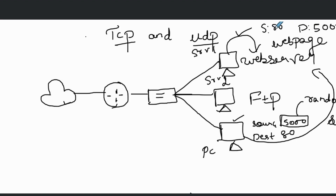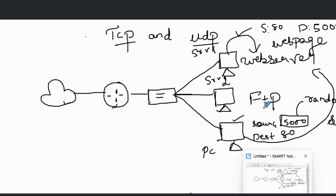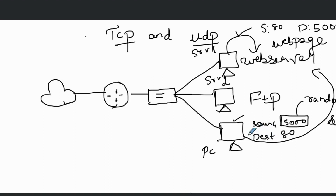When PC one receives this message, the source and destination port numbers tell it that this is part of the same communication session as the message sent earlier. Because of the ports 5000 and 80, PC one can easily identify the session.